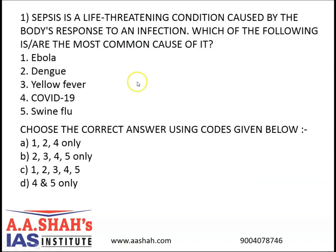Question number one. Sepsis is a life-threatening condition caused by the body's response to an infection. Which of the following is or are the most common cause of it? Number one, Ebola. Number two, dengue. Number three, yellow fever. Number four, COVID-19. Number five, swine flu. Choose the correct answer using the codes given below. A: 1, 2, 4 only. B: 2, 3, 4, 5 only. C: 1, 2, 3, 4, 5 — all of the above. D: 4 and 5 only.